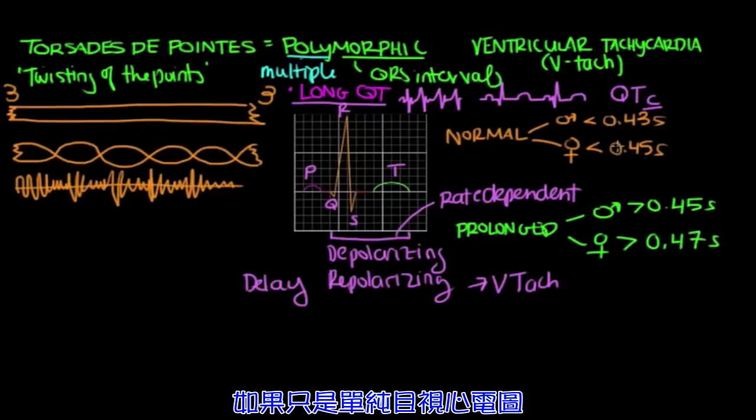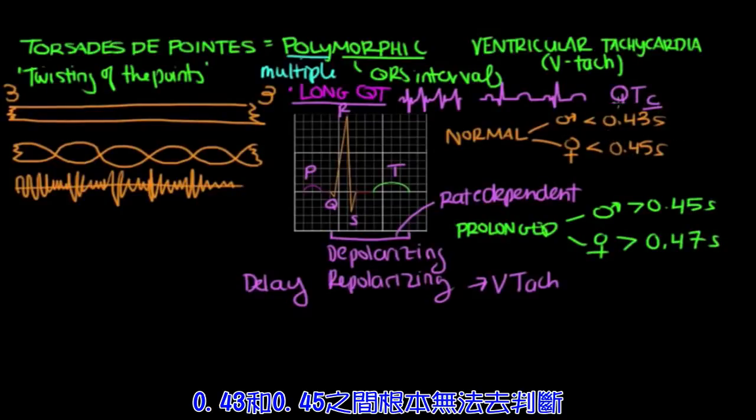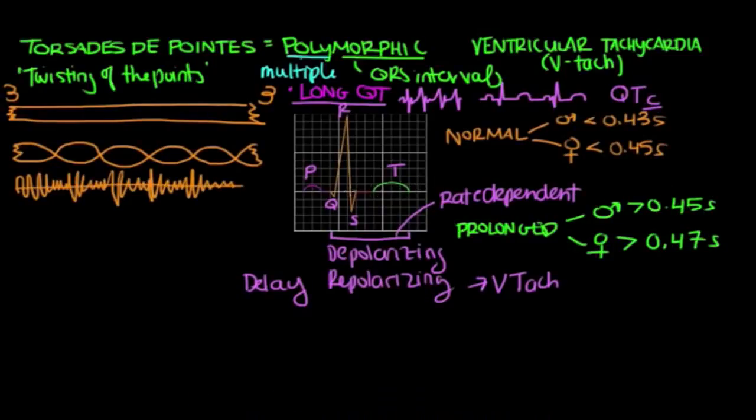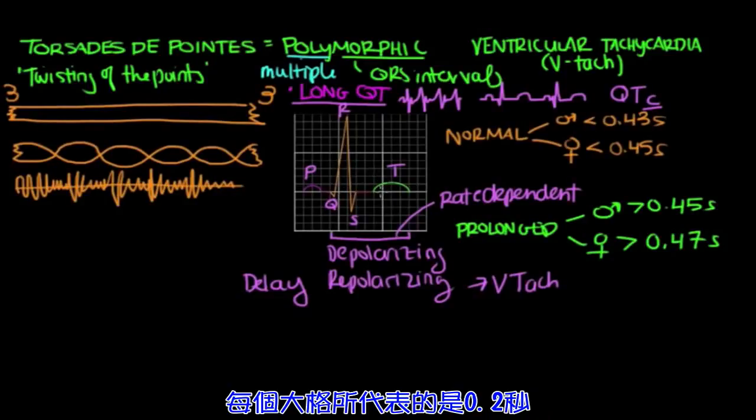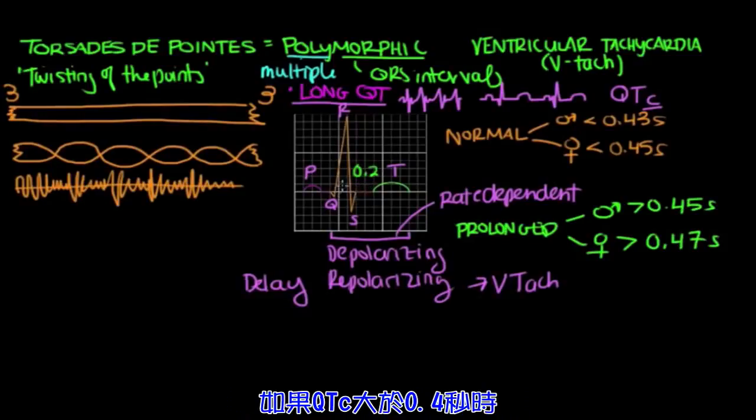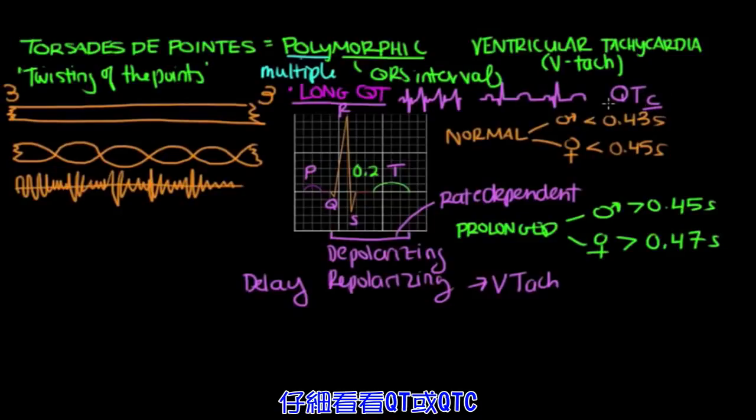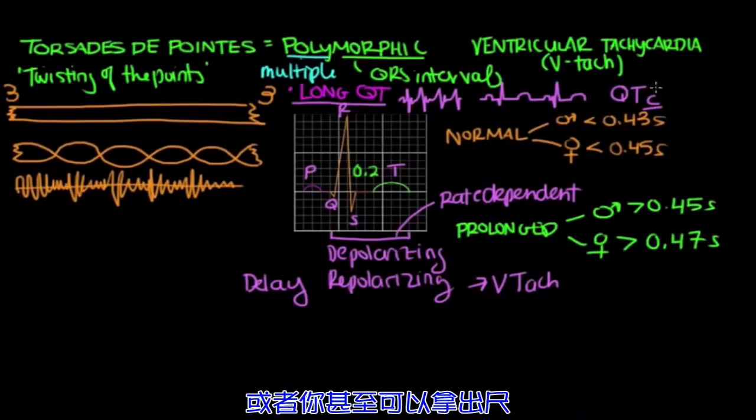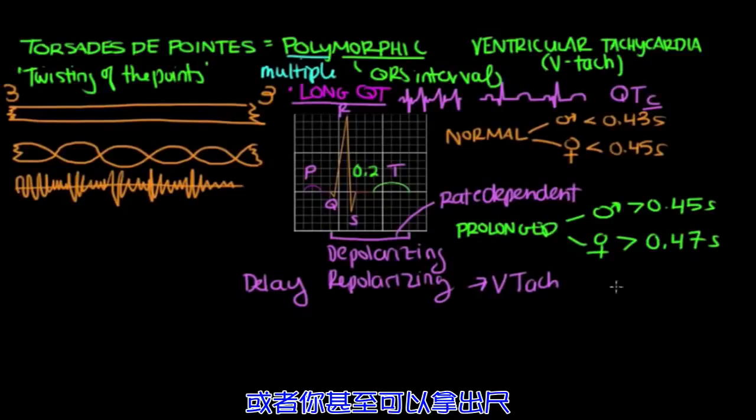Now if you're just eyeballing EKG, it's impossible to tell the difference between 0.43 seconds and 0.45 seconds. But again, if you're just eyeballing EKG, here's something good to know. Every large box represents 0.2 seconds. So if the QTc is longer than two large boxes or larger than 0.4 seconds, then you want to take a closer look at the QT or the QTc. Typically, the machine itself will calculate it for you. Or you can even take out calipers, which are these little measuring tools, and you can measure it yourself.